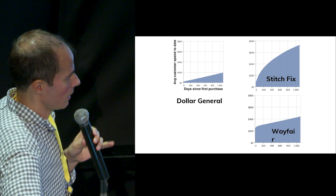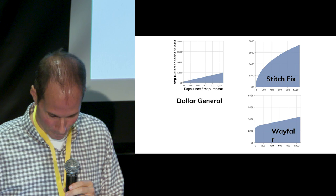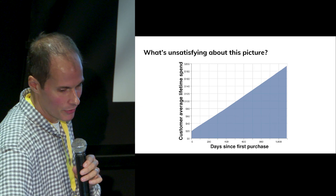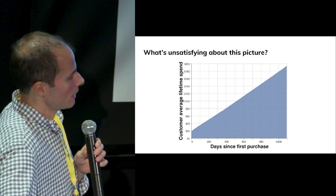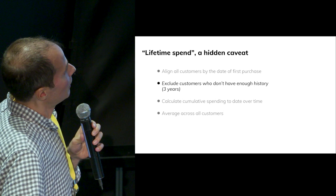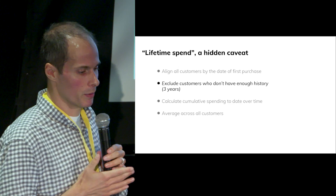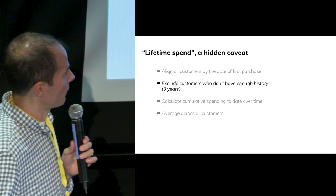Another example is Wayfair, an online furniture retailer, whose customers' lifetime spend is very front-loaded — around $200 initially and then increasing very slowly, which is actually a problem for them. This brings up why the talk isn't over: when we align customers by first purchase date, we're forced to ignore all customers for whom we don't have enough data yet. All those plots were ignoring customers less than three years old, which is unsatisfying and hints at the hard part of analyzing customer lifetime value: partially observed data.